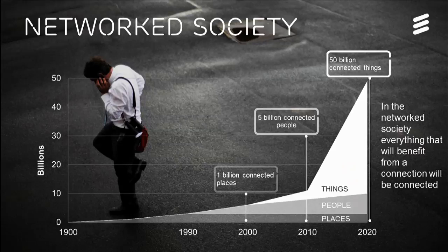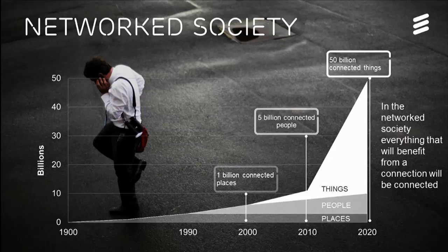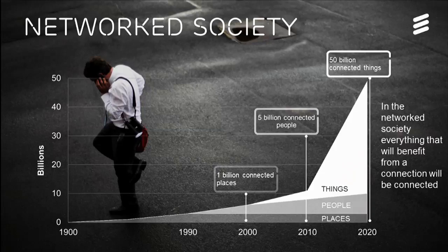Now we're entering the next phase: connecting all the machines — machine-to-machine communication. We've projected about 50 billion connections by the year 2020, a projection made a couple of years ago that's tracking well. For us, the network society means: what can be connected will be connected, and what has the benefit of being connected to the internet will be connected to the internet.